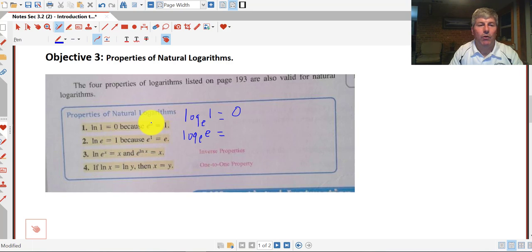The natural log of e equals 1. I asked you to memorize that, because e to the 1 is e. That's log base e of e. What's the exponent on base e that gives an answer of e? When your base and your answer are the same, your exponent is 1.